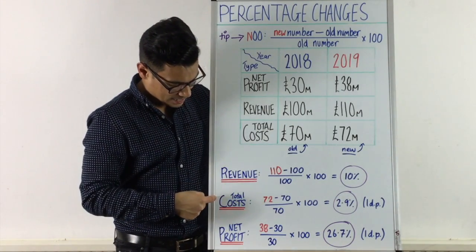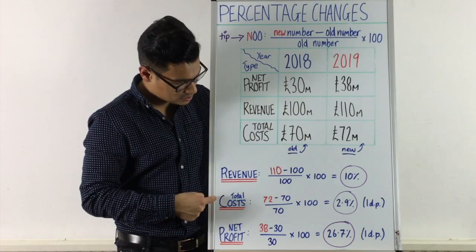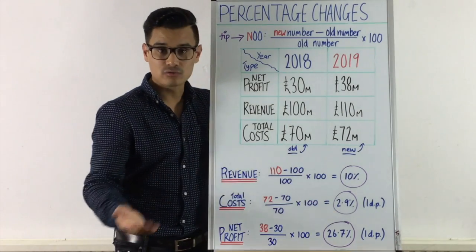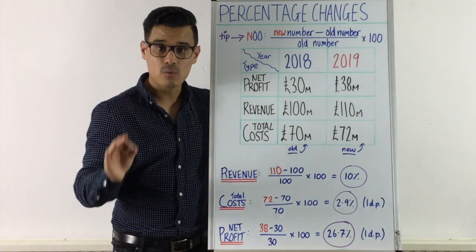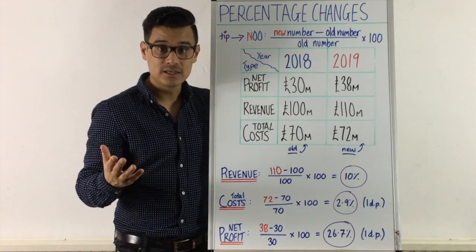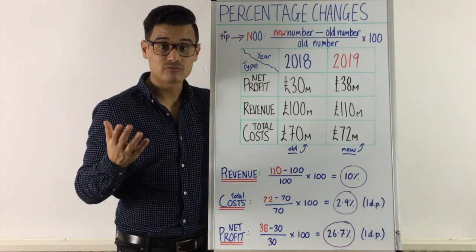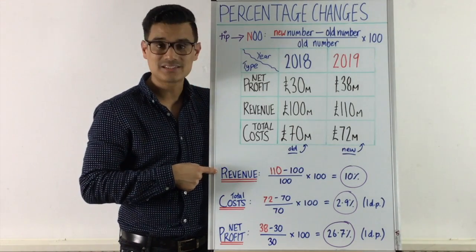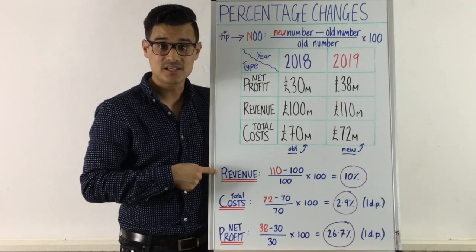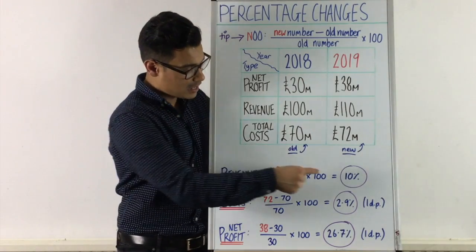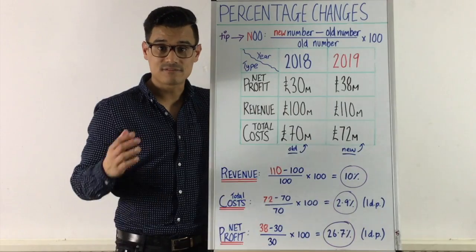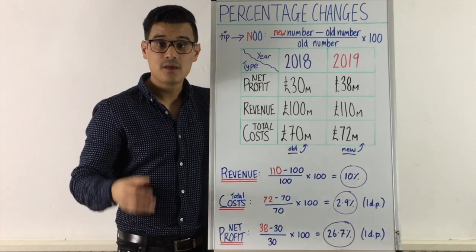So total costs have increased by 2.9%, which isn't a great thing. However, it's actually going to turn out great for your profit because your revenue has increased by a greater percentage — revenue increased by 10%. That's a fantastic thing.